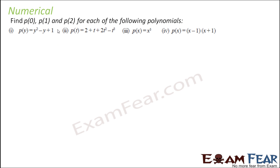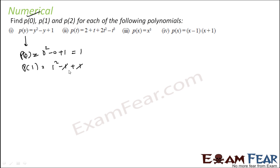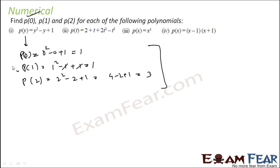We have to find p(0), p(1), and p(2) for the polynomial p(y) = y squared minus y plus 1. p(0): 0 squared minus 0 plus 1 equals 1. p(1): 1 squared minus 1 plus 1 equals 1. p(2): 2 squared minus 2 plus 1 equals 4 minus 2 plus 1 equals 3.